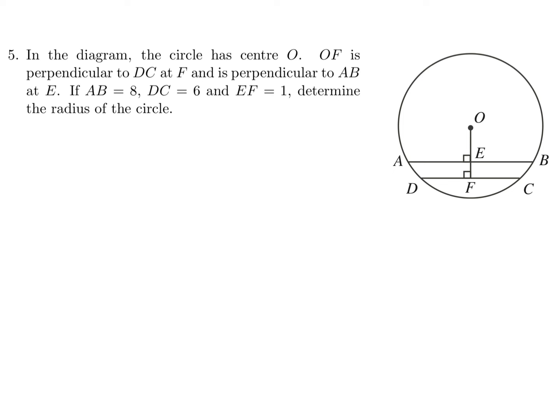In the diagram, the circle has center O. OF is perpendicular to DC at F and is perpendicular to AB at E. If AB is 8, DC is 6, and EF is 1, determine the radius of the circle. Let's set this up. Let's see what we can do. The first thing, of course, I think is to draw some lines. So, I'm going to draw one line from A to O, and another line from D to O. So those two lines represent the radii, and let's label them. So, I'll put the R here.